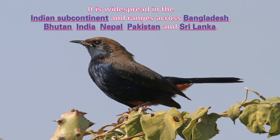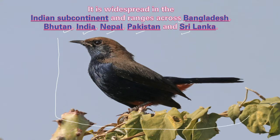It is widespread in the Indian subcontinent and ranges across Bangladesh, Bhutan, India, Nepal, Pakistan and Sri Lanka. This is how exactly an Indian robin looks like.